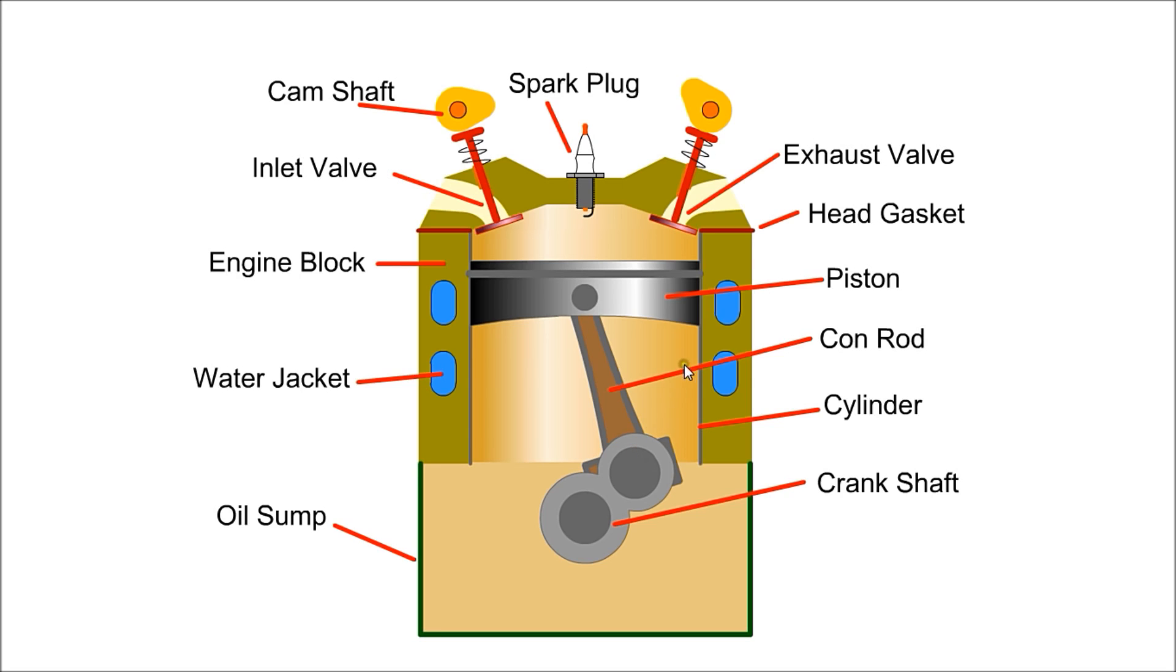At the top is the head gasket, which provides a seal between the block and the cylinder head. The exhaust valve is also controlled by a camshaft. It allows the waste gas to exit from the cylinder.